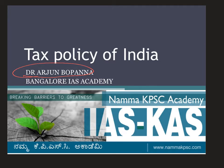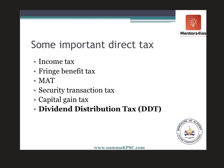So far we have been discussing tax policy of India, and in the previous video we discussed direct taxes — various types of direct taxes including personal income tax, corporate income tax, fringe benefit tax, MAT (minimum alternative tax), security transaction tax, capital gain tax, and dividend distribution tax. Those who haven't watched it, please go and watch video 4 of this lecture series.